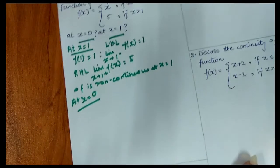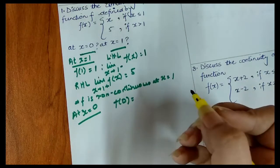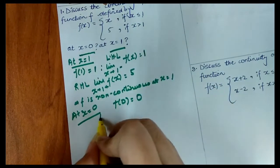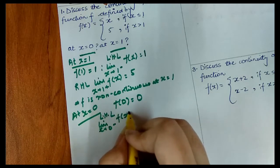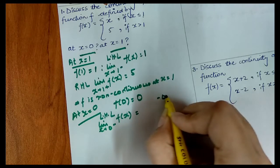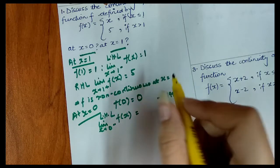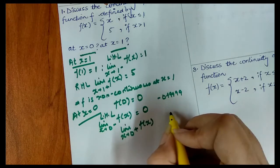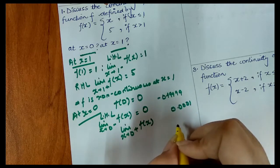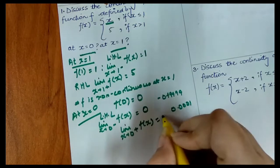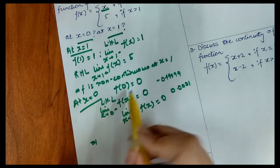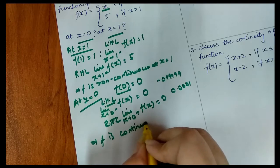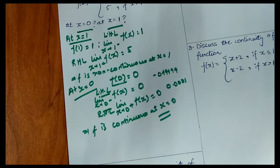The function is non-continuous at x equal to 1. Now we check at x equal to 0. First we find f(0): when x equals 0, the value is 0. Similarly, the limit as x approaches 0 from the right of f(x) is also 0. So at x equal to 0, f(0), LHL, and RHL are all equal to 0, so our function is continuous at x equal to 0.